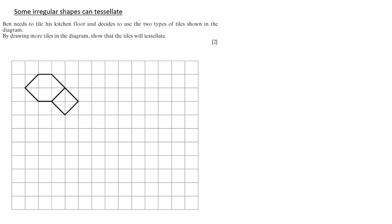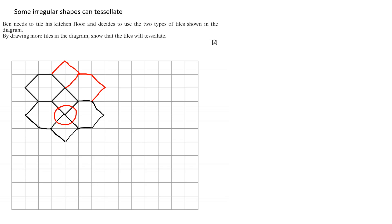Sometimes though, you can have irregular shapes that tessellate. Looking at this question: Ben needs to tile his kitchen floor and decides to use two types of tiles shown in the diagram. By drawing more tiles in the diagram, show that the shapes will tessellate. So if I repeat the shapes — he has an irregular hexagon and a square — we can carry those shapes on. And if we look at the point where the shapes intersect, we can see there are no gaps, but we need to prove this.